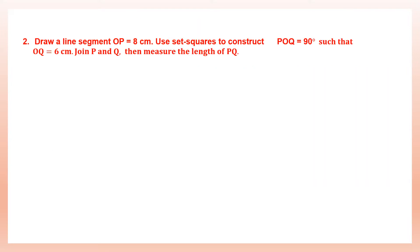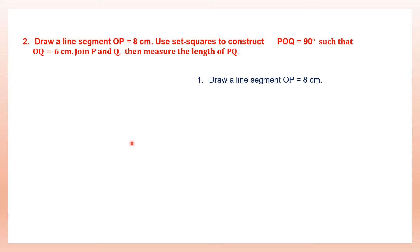Question 2: draw a line segment OP equals 8 centimeters. This time use set squares to construct angle POQ of 90 degrees such that OQ is 6 centimeters. Then join P and Q and measure the length of PQ. Let's start: draw a line segment OP equals 8 centimeters. This is 8 centimeters.